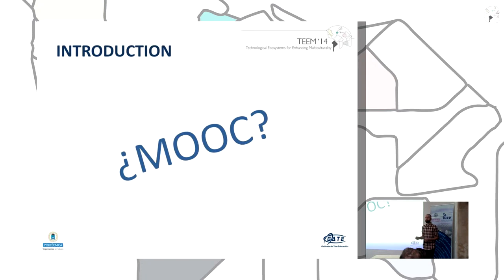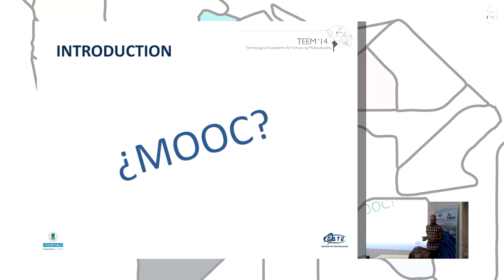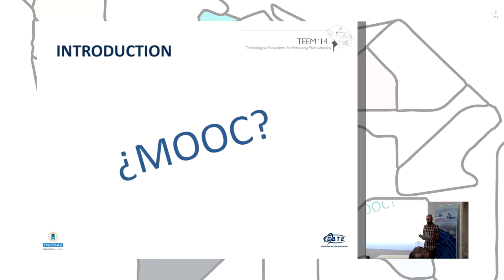There are two types of MOOC. We can find the xMOOC, which is more traditional, like an online course. The difference is video lectures instead of text, for example, and peer-to-peer activities — activities where students review another student's work. And another type of MOOC is the cMOOC, a connectivity MOOC, with characteristics about connectivity.